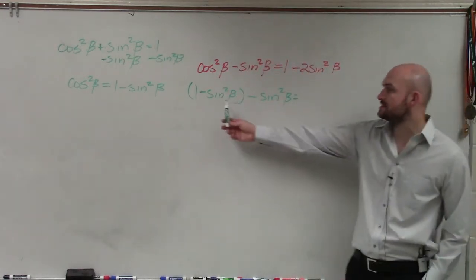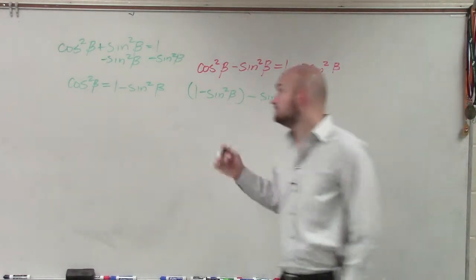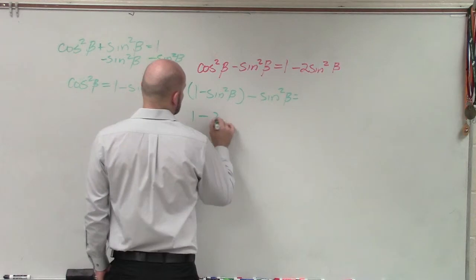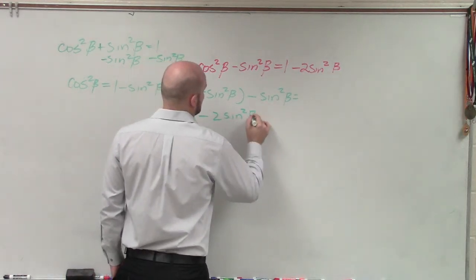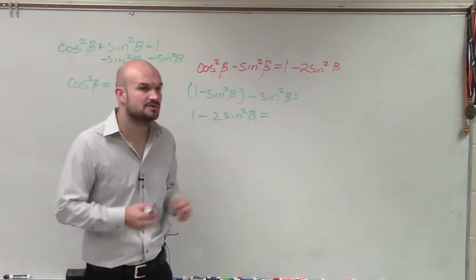Now you can see, if I get rid of the parentheses, negative sine squared of beta minus negative sine squared of beta gives 1 minus 2 sine squared of beta. You can see that the left side equals the right side.